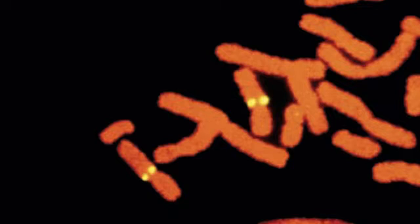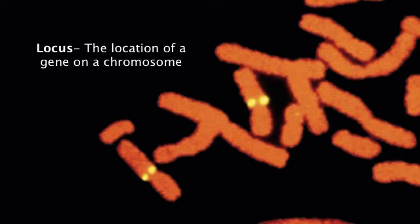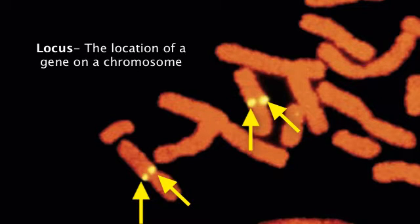We call the location of a particular gene a locus. Two identical alleles on sister chromatids, each on homologous chromosomes.